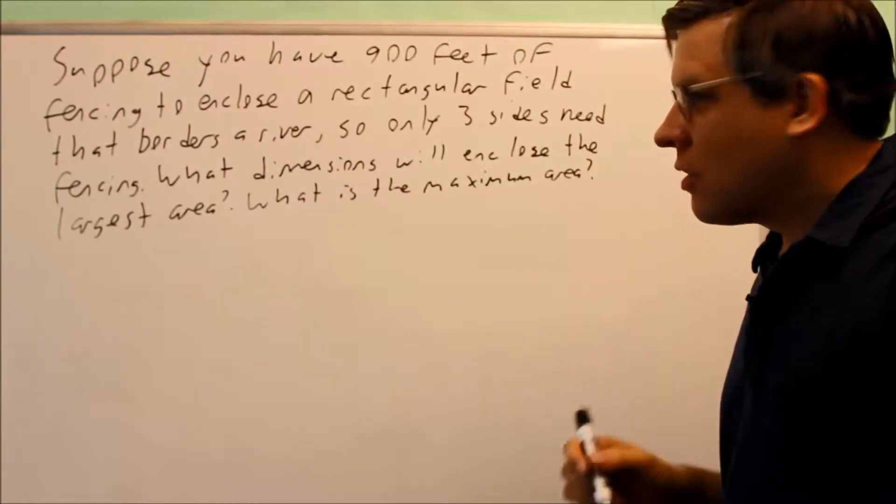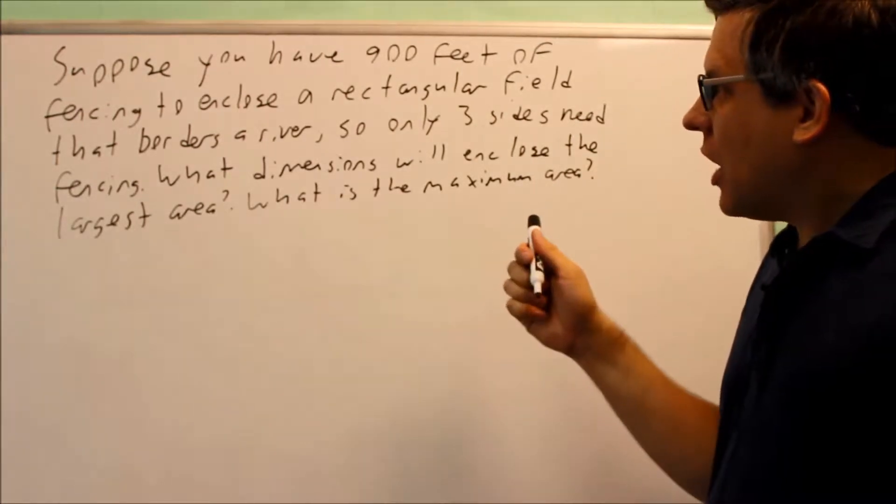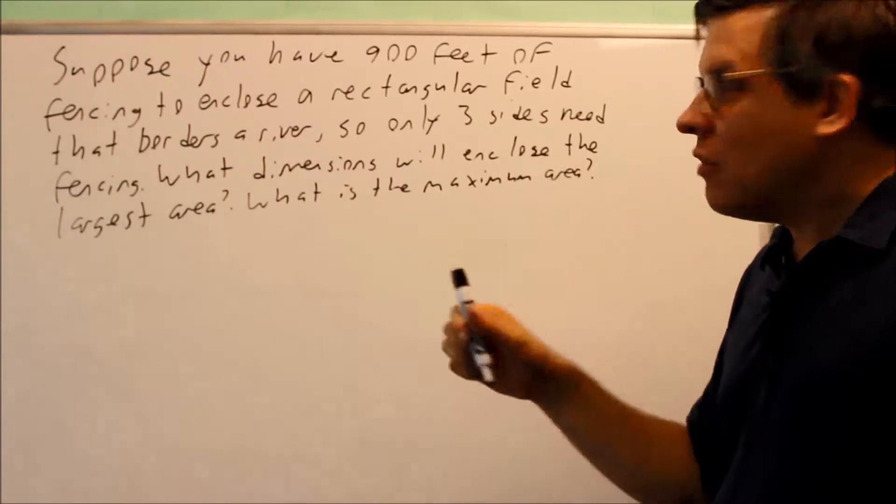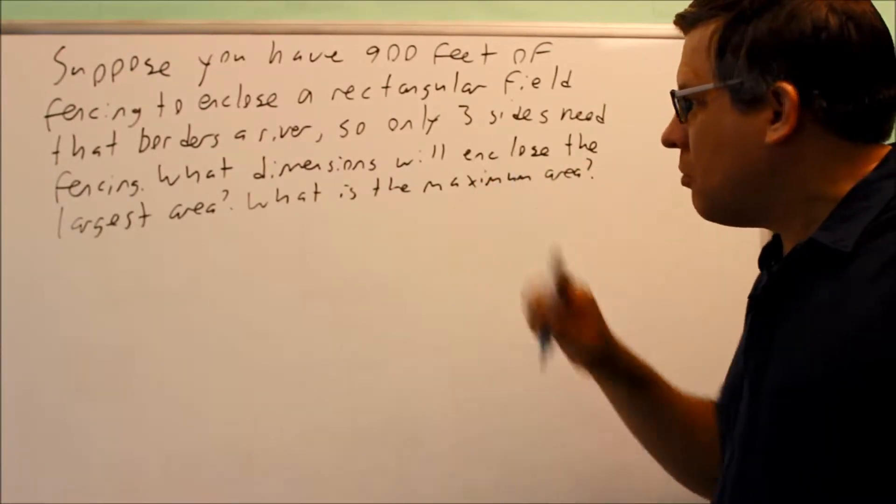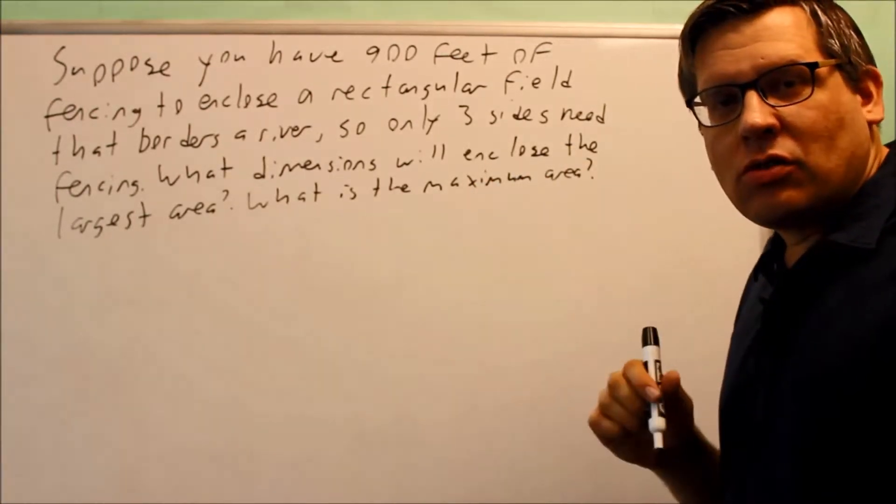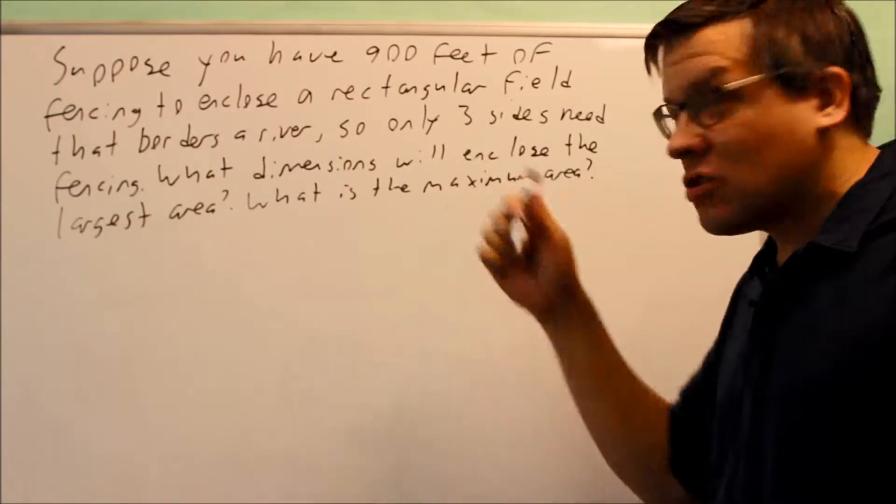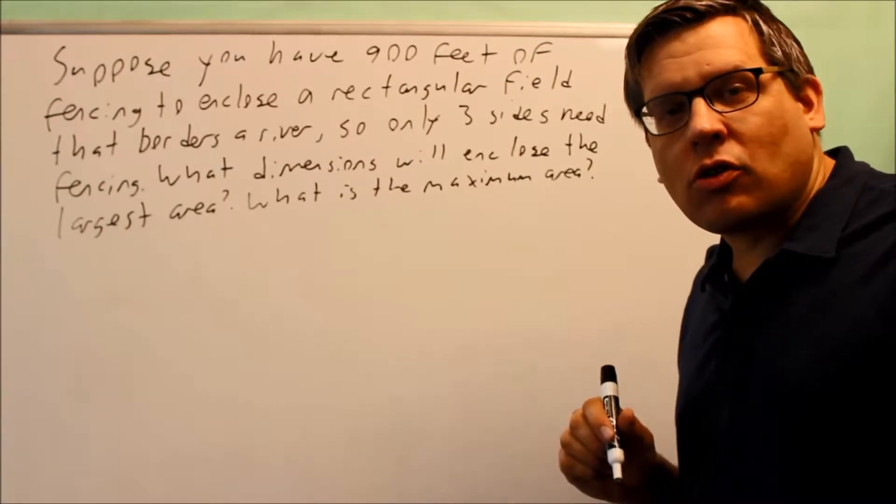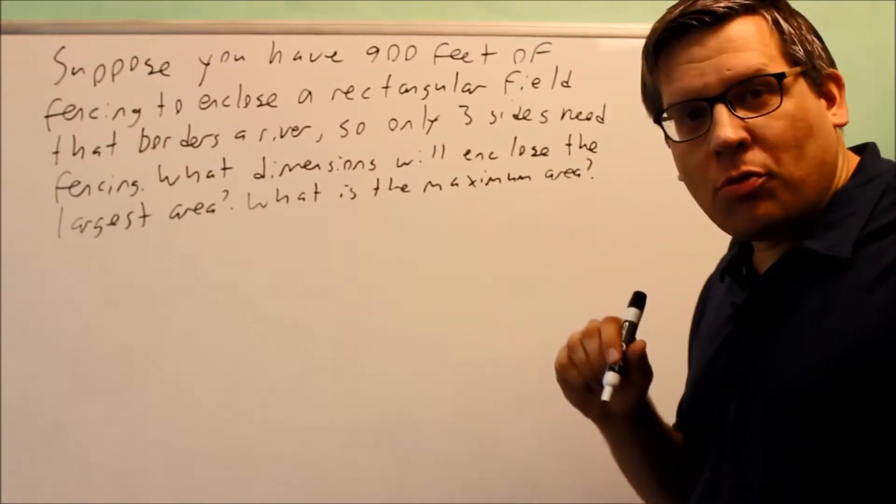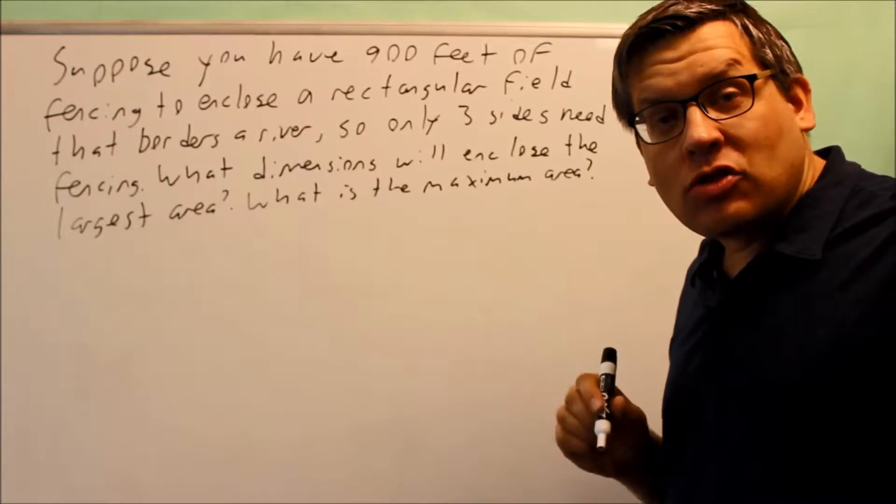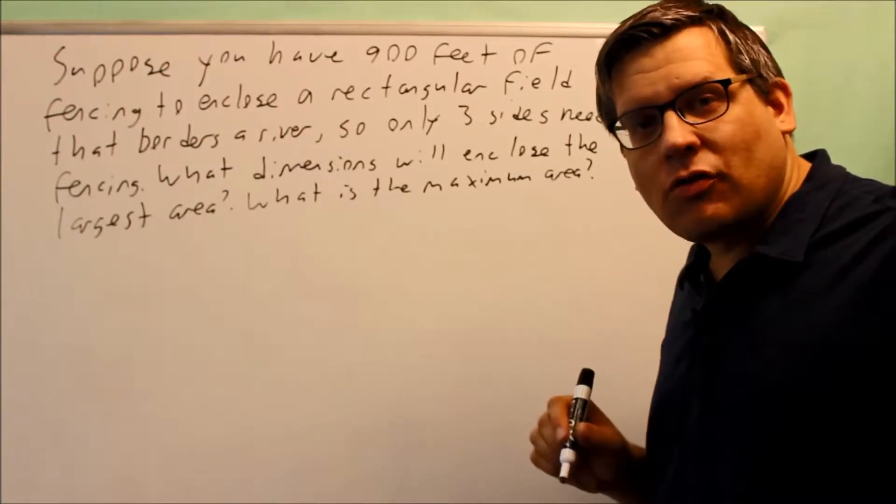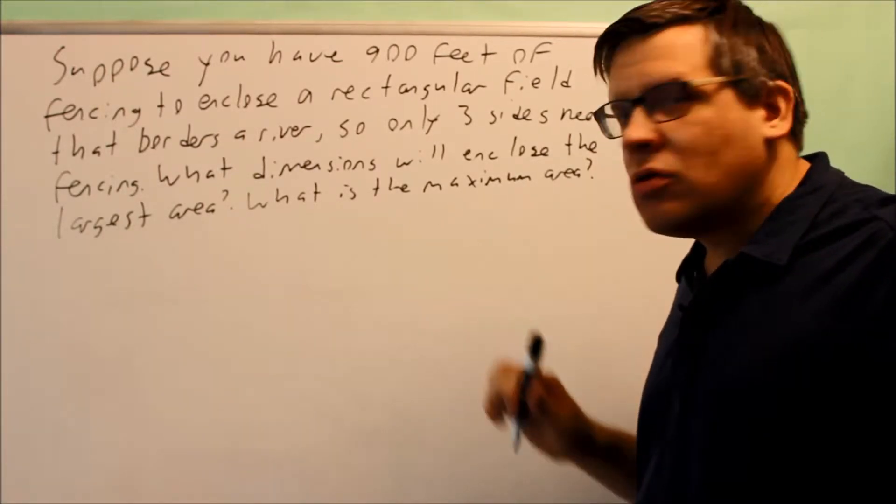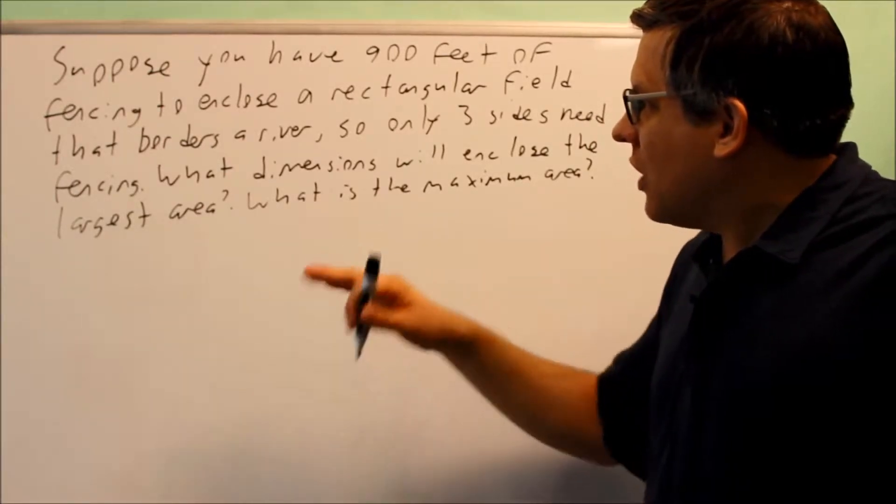These kinds of problems from this section involve the words minimum and maximum. What you have to do is find a quadratic equation, and then once we have that quadratic equation, you want to apply the vertex formula—that's negative b over 2a—that gives you the x-coordinate of your vertex.